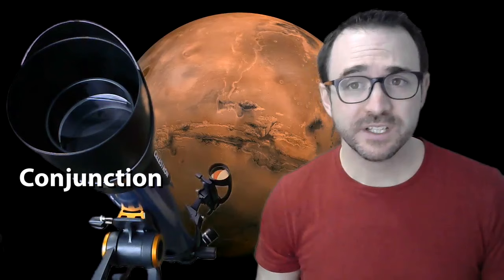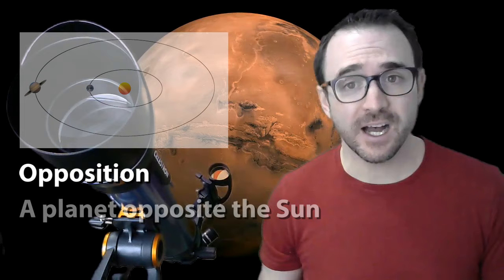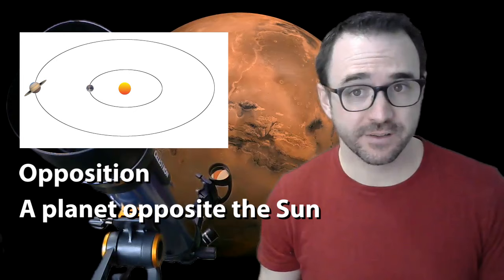All right, now I just want to go over a few terms you might hear when researching the planets. First, you might hear about conjunctions. Well, we talked about conjunctions in a previous video. To put it simply, this generally refers to when two or more planets or the moon appear near each other in the sky. You may also hear the term opposition. This is when a planet is directly opposite the sun from the earth. This also means that the planet is near its closest to earth and also that it's the highest in the sky in the middle of the night.